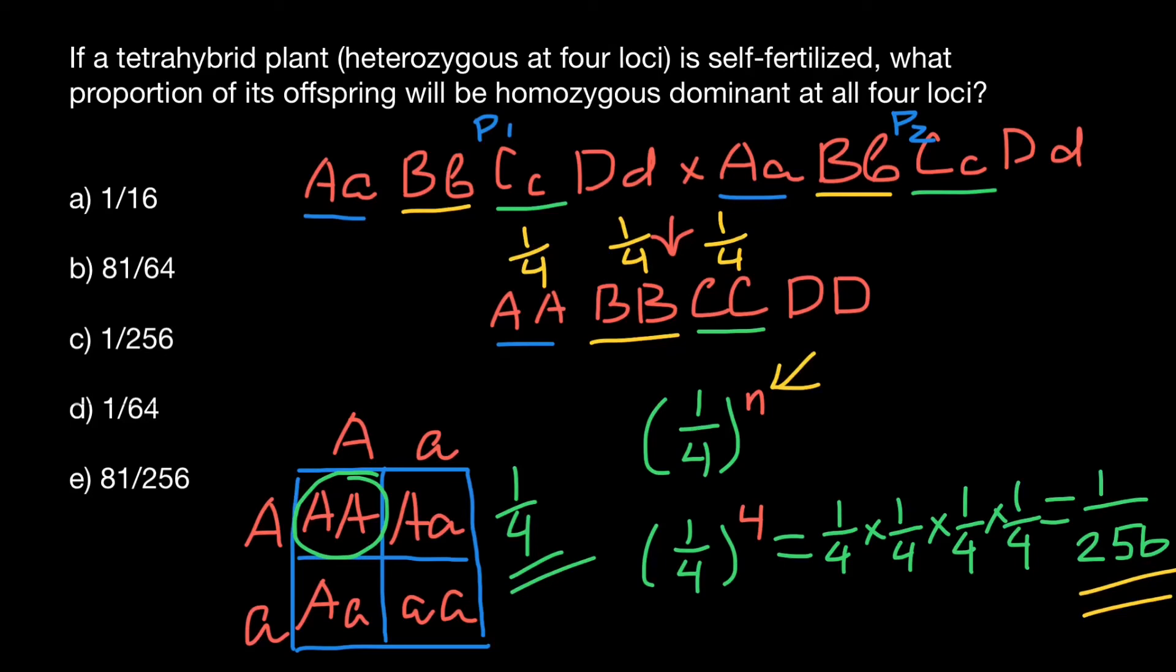For locus D, we have the same probability, one quarter. We multiply all these independent probabilities together, and we get one over 256.